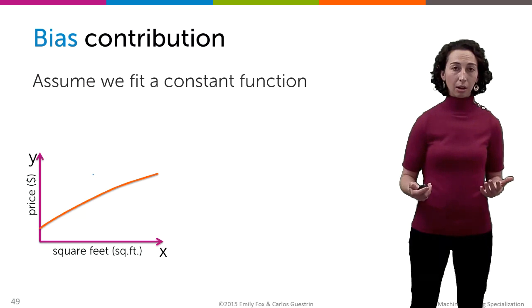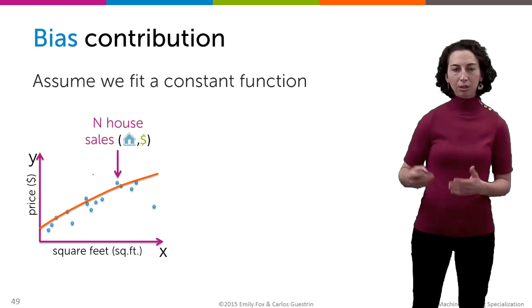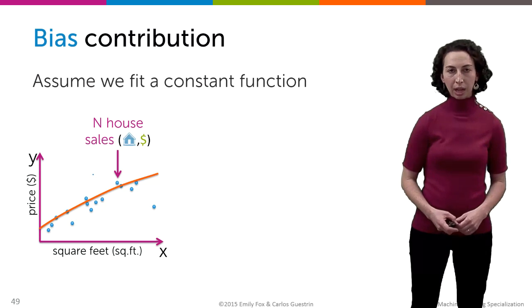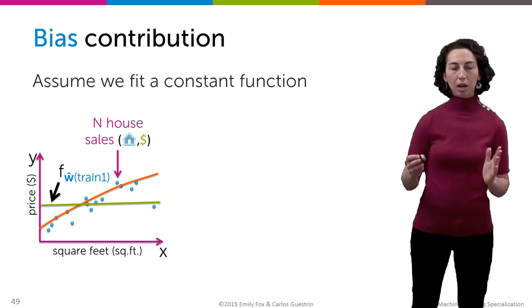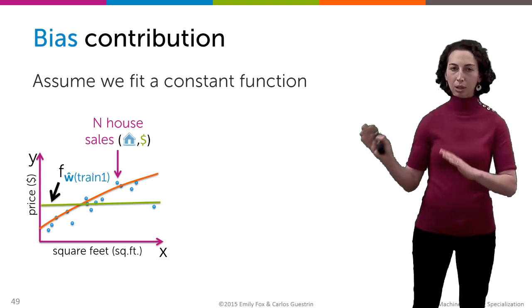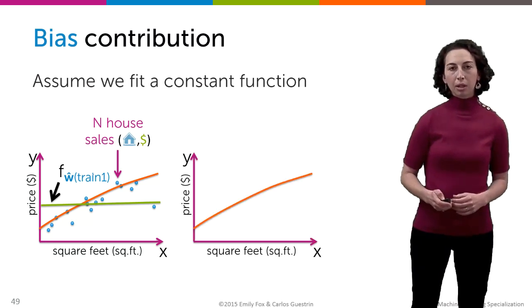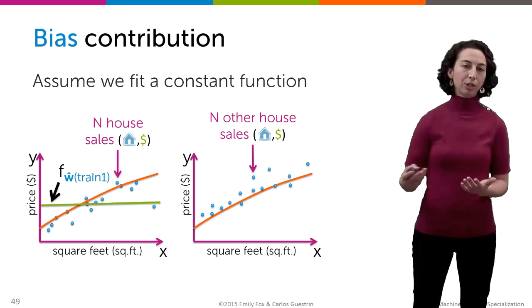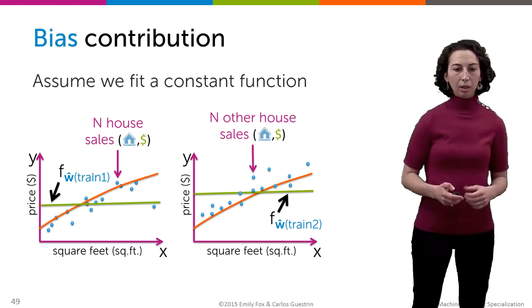So to think about this, let's think about how we get data in our data set. So here, these points that we observed, they're just a random snapshot of n houses that were sold and recorded and we tabulated in our data set. Well, based on that data set, we fit some function. And thinking about bias, it's intuitive to start with a very, very simple model of just a constant function. So that's what I'm going to show here. But we fit whatever model we're specifying. But what if another set of n houses had been sold? Then we would have had a different data set that we're using. And when we went to fit our model, we would have gotten a different line.